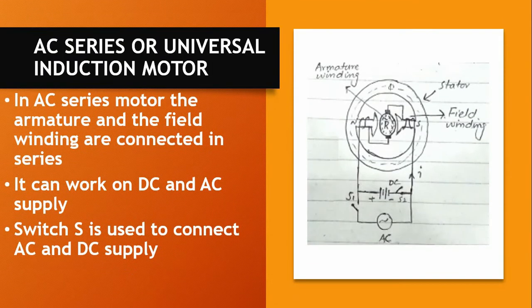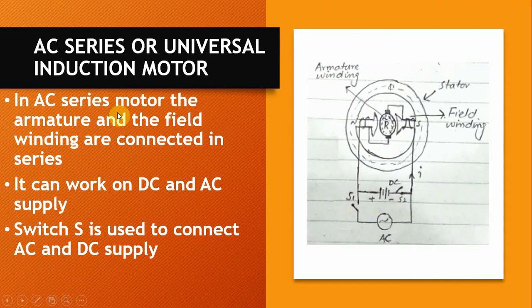The third type is the AC series or universal induction motor. A key quality of the AC series motor is that it can be used on both DC and AC supply, using switches to select between the two. In the AC series motor, the armature and the field winding are connected in series, as you can see in this picture showing the field winding and armature connected in series.